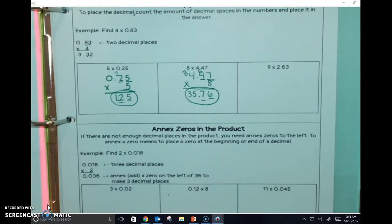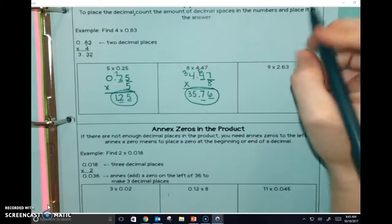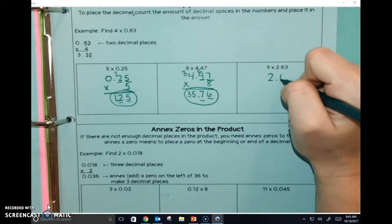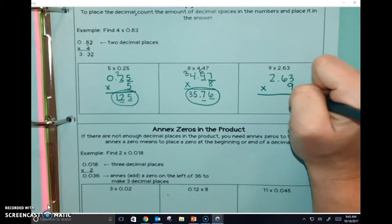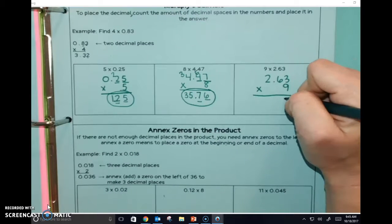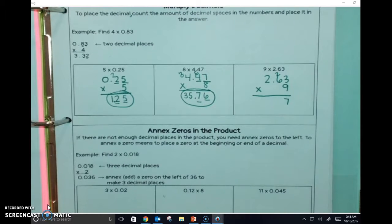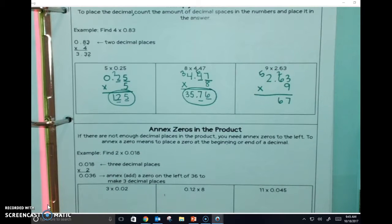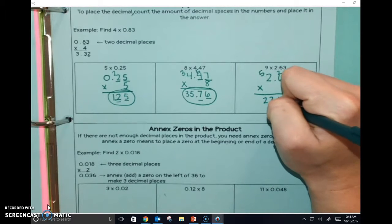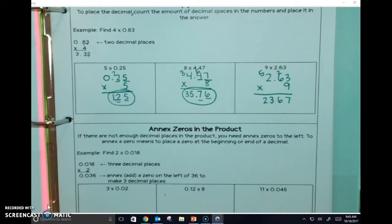9 times 2.63. What number do you guys want to put on top? 2.63? Yeah. Times 9. So 9 times 3 is 27. 6 times 9 is 54, plus 2 is 56. 2 times 9 is 18, plus 5 is 23.